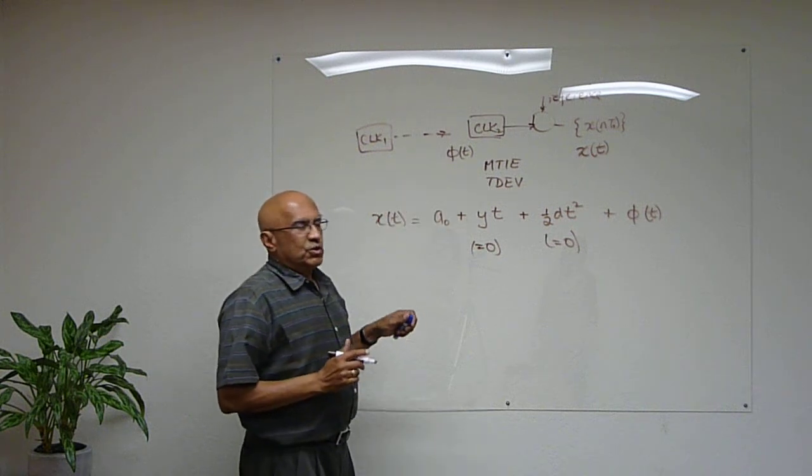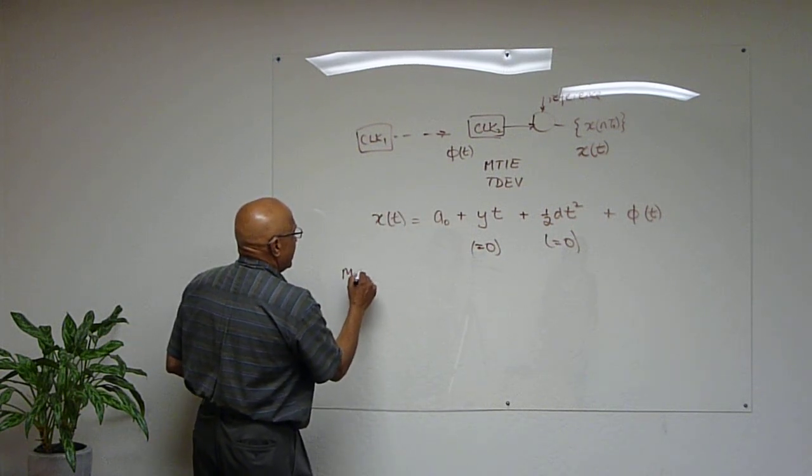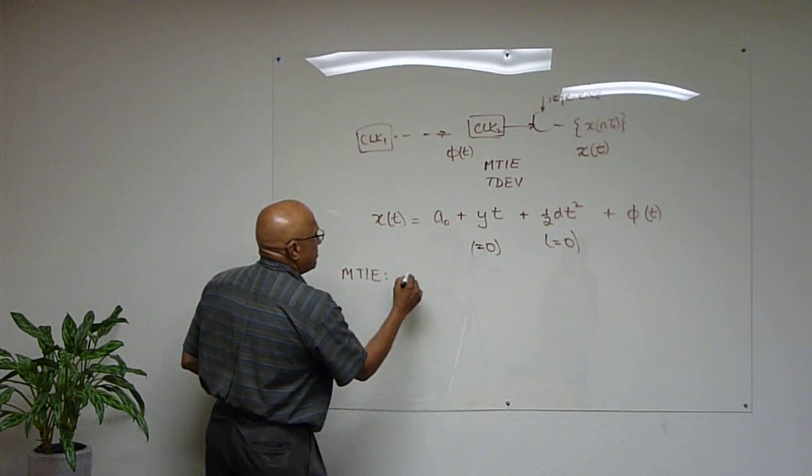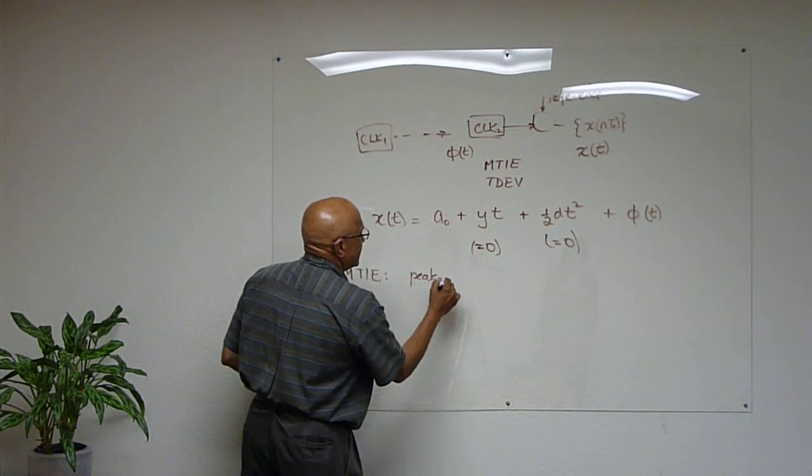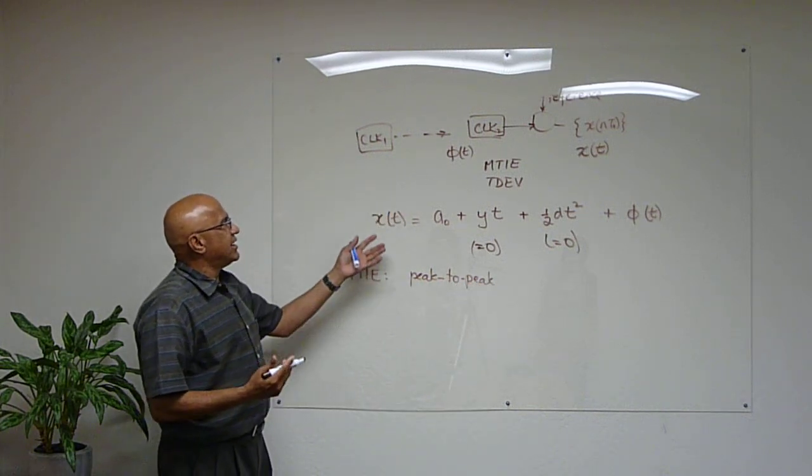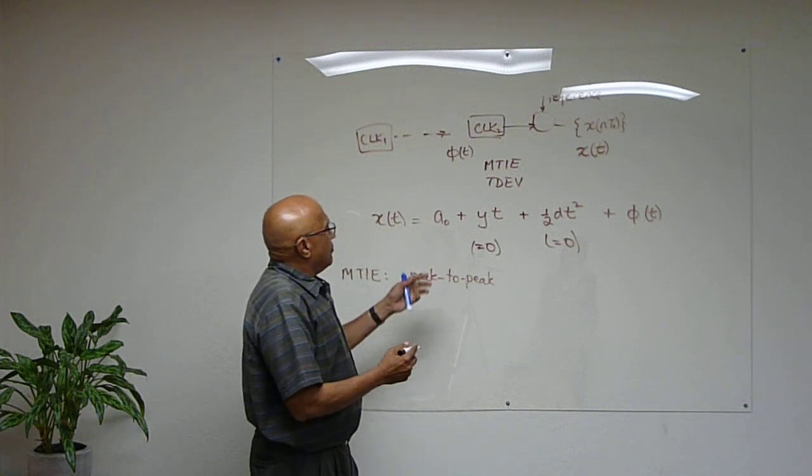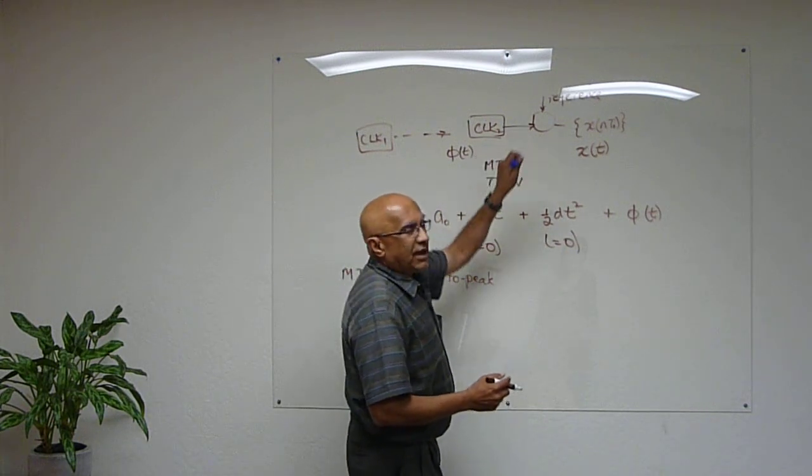So what does MTIE do? MTIE looks at the peak-to-peak, in a sense. So MTIE, think of it as a way of measuring the peak-to-peak errors between the clock output and its drift.